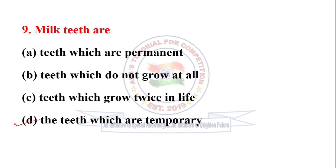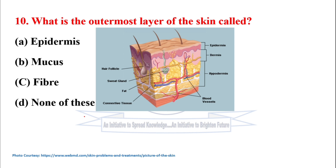Next question: What is the outermost layer of the skin called? See the diagram — it is a cross section shown here. The outermost layer is epidermis, then dermis, then hypodermis. So the correct option is A, which is epidermis.